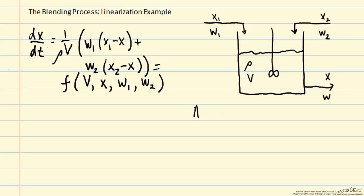In this case, we're going to assume that our density ρ is constant. We're also going to assume that the inlet mass fractions x1 and x2 are constant for this example. And now we're going to calculate the linearization of this nonlinear dynamic equation.